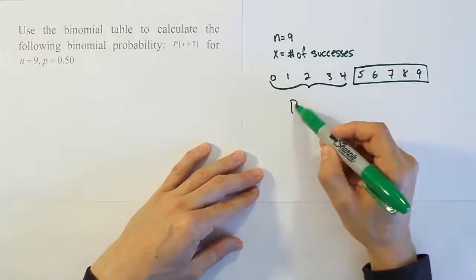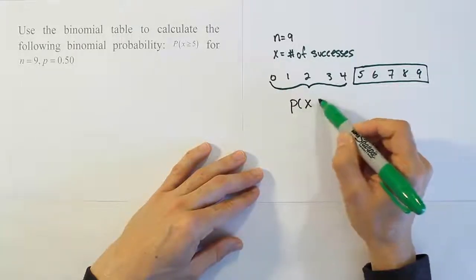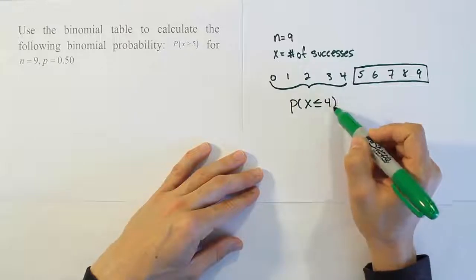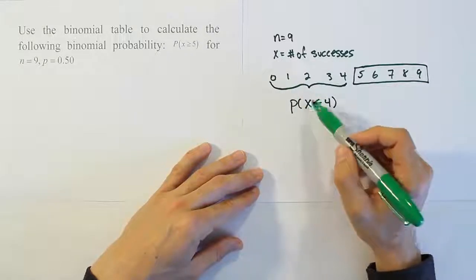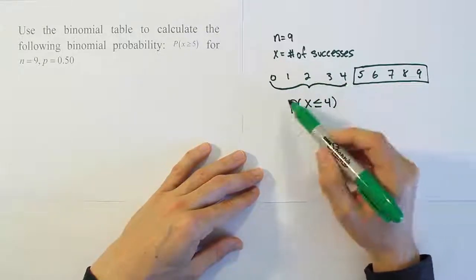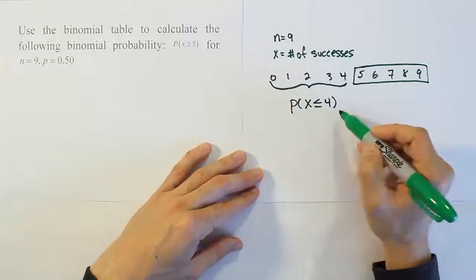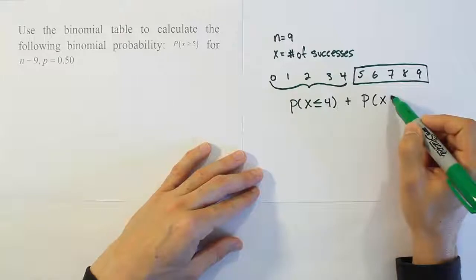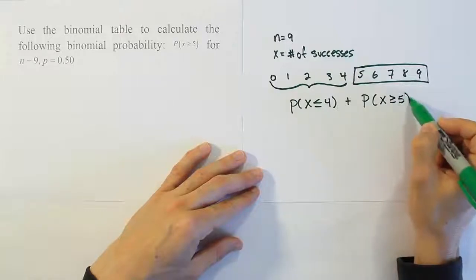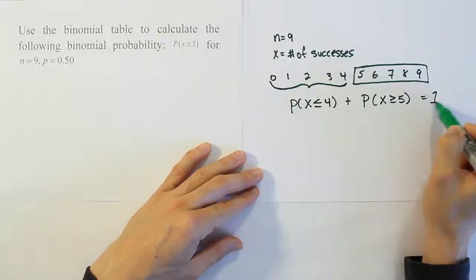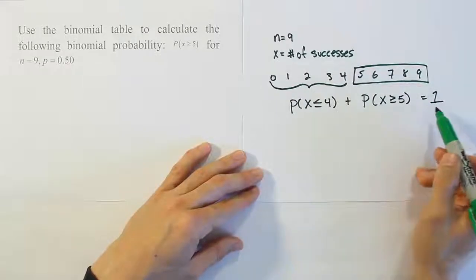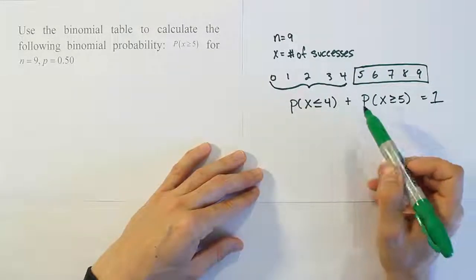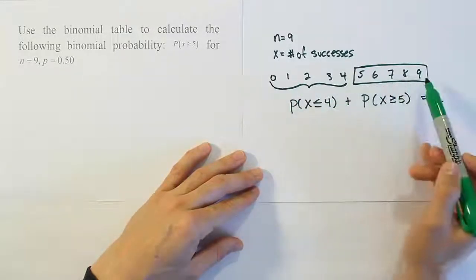How would you describe this? This is the probability that X is less than or equal to 4. If I wanted to calculate the probability of X less than or equal to 4 and add that to the probability that X is greater than or equal to 5, what I end up with is the chance of 100%, or the probability equal to 1. Because this is all the possibilities.